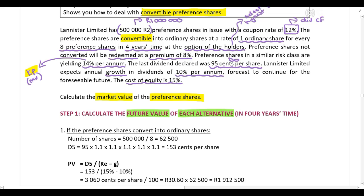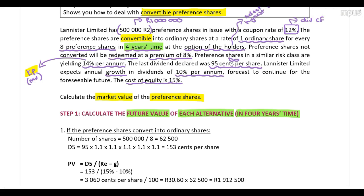In step one, calculate the future value of each alternative. In this example the shares are convertible in four years' time at the option of the holder, so we calculate the future value of each alternative in four years' time. There are two alternatives: either the preference shares convert into ordinary shares, or they are redeemed at a premium of 8%.